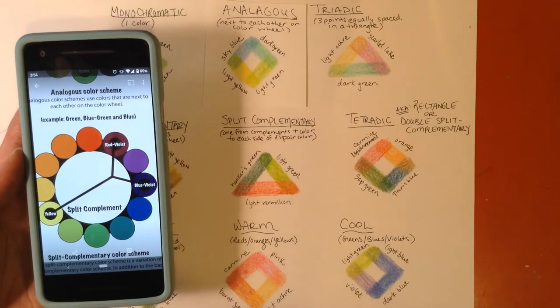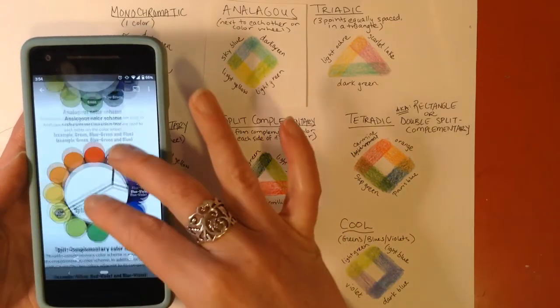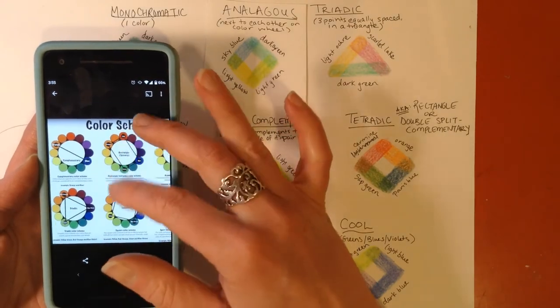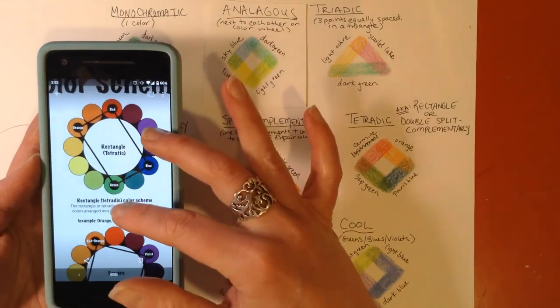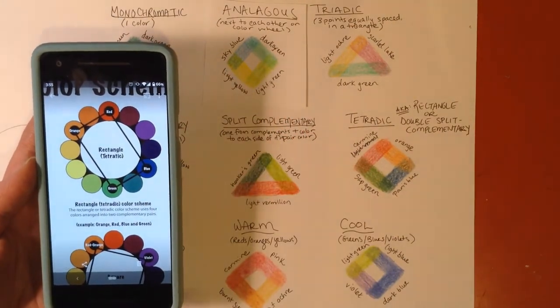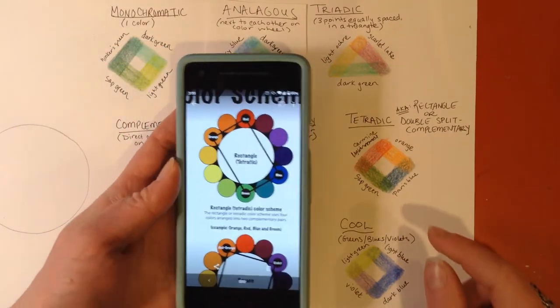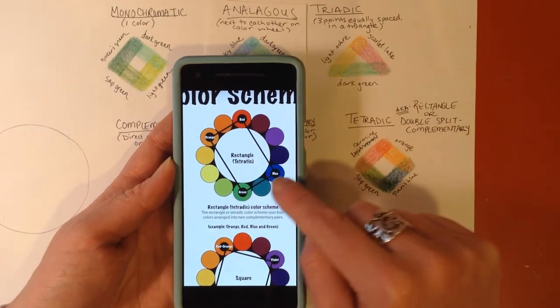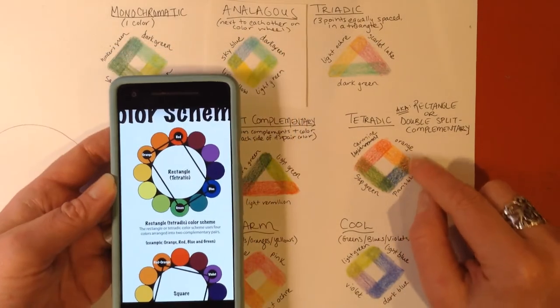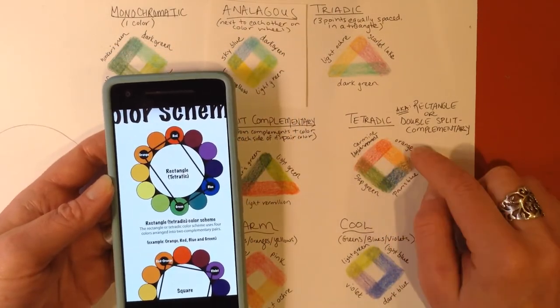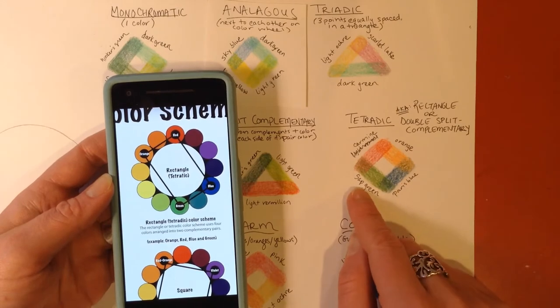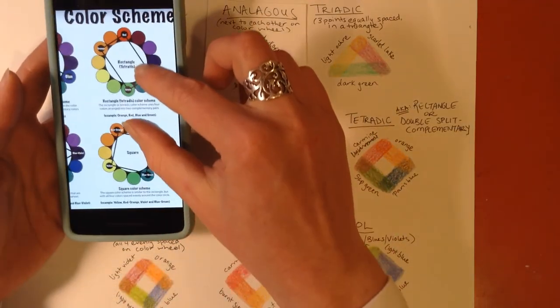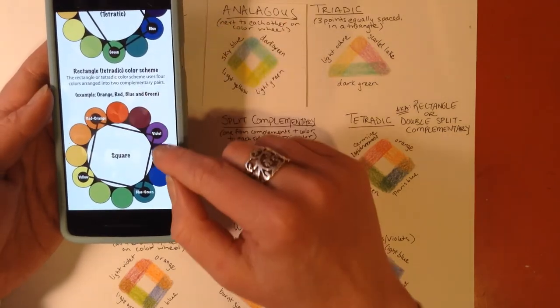If you look at the tetradic example, this is also called rectangular or sometimes it's called a double-split complementary. I pretty much stuck with this red, orange, green, and blue, pretty true red, orange, green, and blue with carmine, orange, Paris blue, and sap green. Same thing for the square, it's very similar.